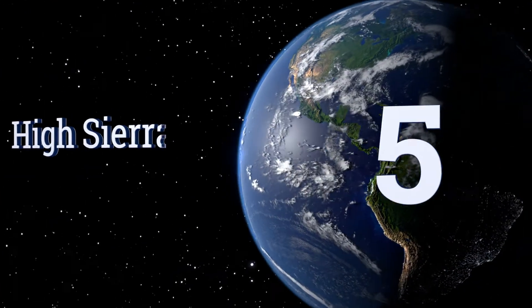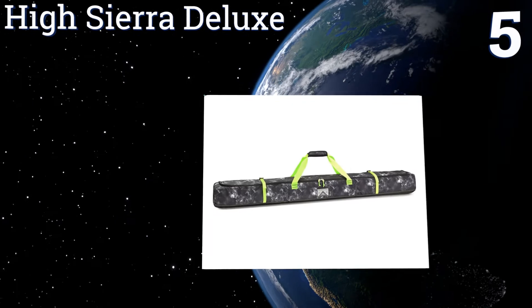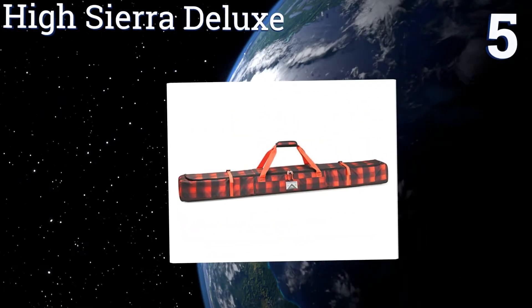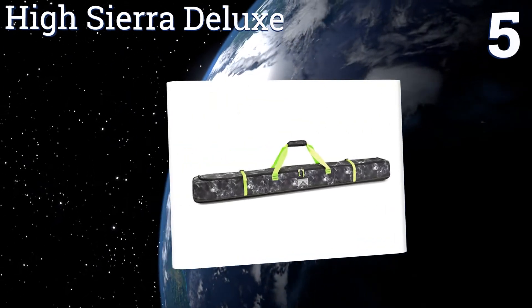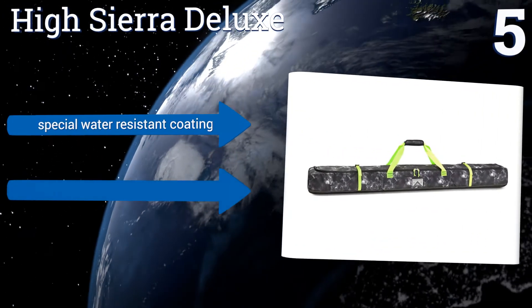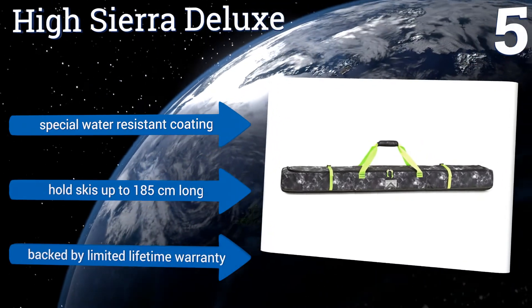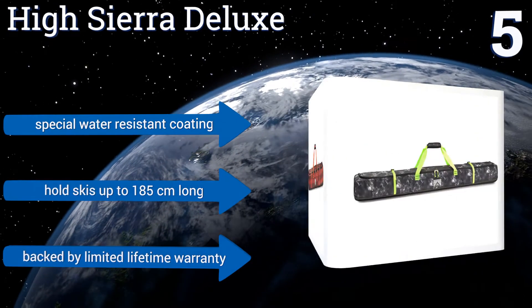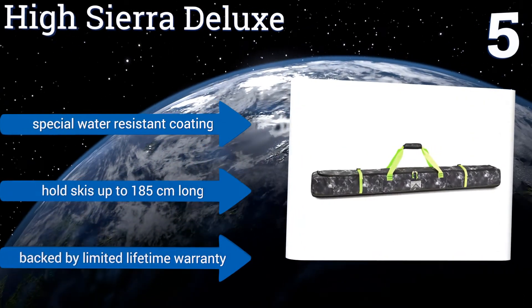Moving up our list to number five, the bright and colorful High Sierra Deluxe is made from a diamond ripstop Duralite material that should last through years of trips to the slopes without fading or tearing. It doesn't have a designated shoulder strap, but the long webbed handles can be used as one. It features a special water resistant coating and can hold skis up to 185 centimeters long.